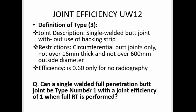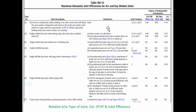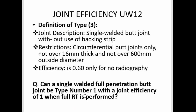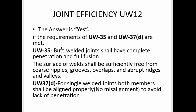A question arises: can a single welded full penetration butt joint be Type 1 with a joint efficiency of 1 when full radiographic examination is performed? In Table UW-12, joint efficiency of 1 is assigned to double welded butt joints under Type 1. For a single welded joint, joint efficiency of 1 does not normally apply even with full radiography — the only applicable efficiency for a single welded joint is 0.60 when no radiography is performed. However, the answer is yes, under certain conditions.